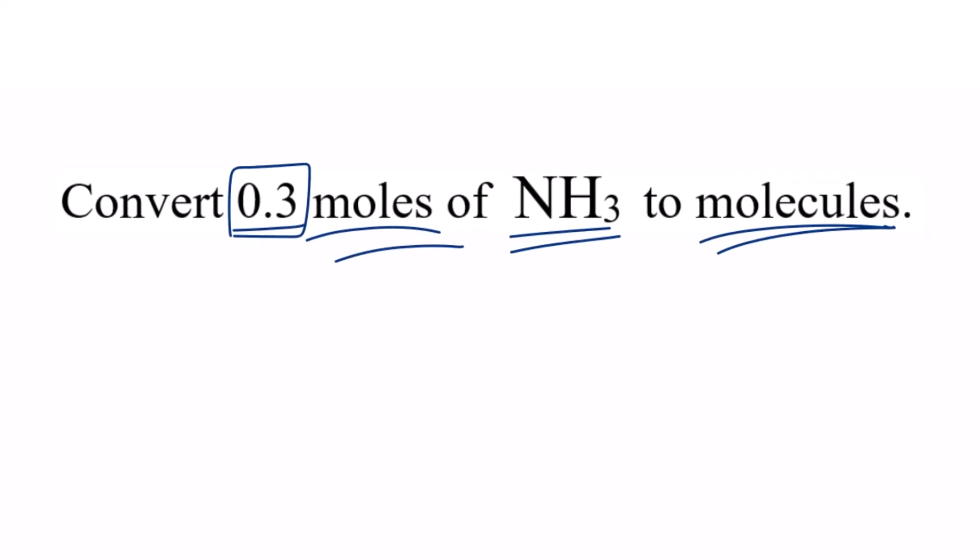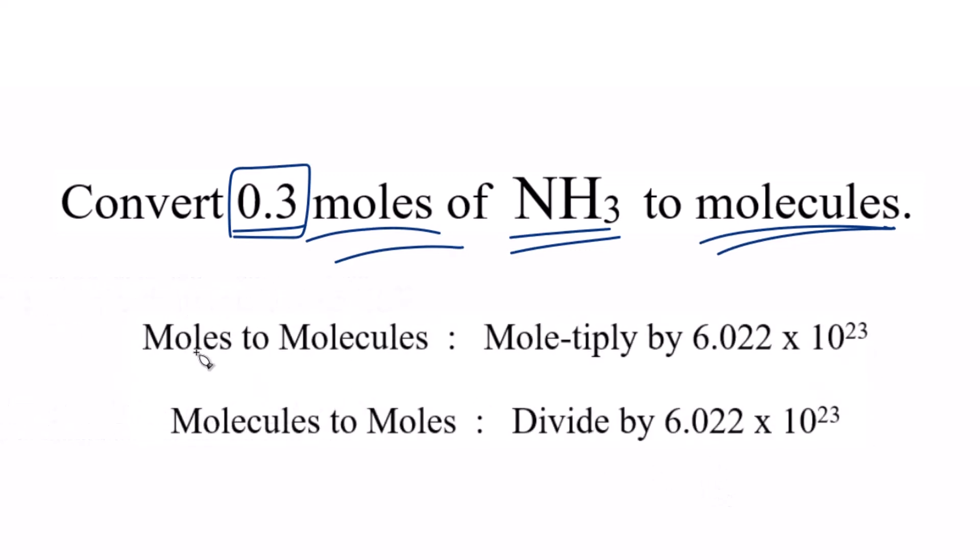A good way to think about this is this mnemonic here. When we have moles and we're going to molecules, we multiply by Avogadro's number. If we had moles to grams, we'd multiply by the molar mass. We went from moles to liters by 22.4.